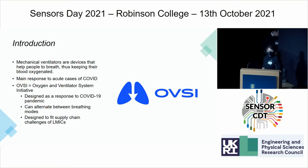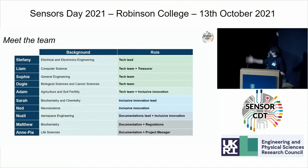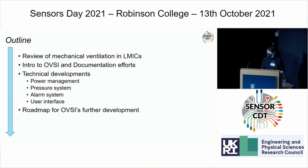It's the Oxygen and Ventilator System Initiative — it has a ventilator side project and an oxygen concentrator project. We took over the work of the previous design team to improve the ventilator side. The ventilator was initially designed to alternate between different breathing modes — helping patients breathe and breathing on behalf of patients — and also designed to fit the supply chain challenges of LMICs by having parts that can be either supplied or manufactured locally. We are a team with a wide range of backgrounds, focused on technical development, inclusive innovation, and documentation.